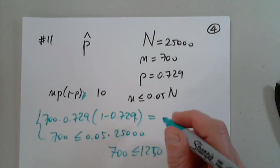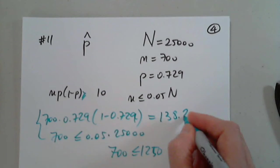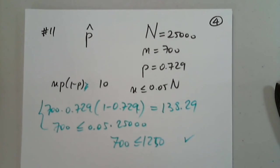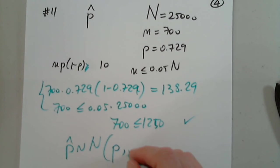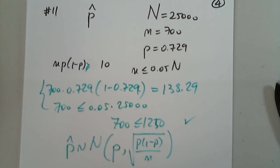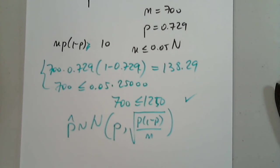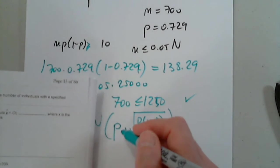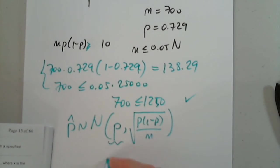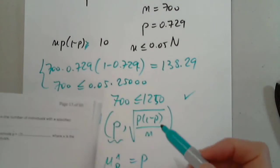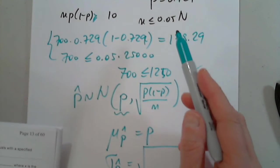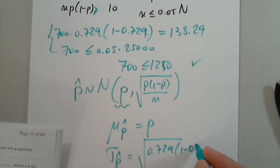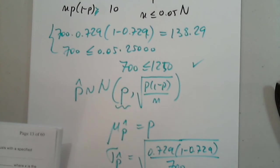So 138.29, so in that case we would say that p-hat is approximately normal with the same mean, right? And in here we have the square root of p(1-p) divided by n. That's the standard deviation. So the mean of p-hat is p, and the standard deviation of p-hat is the square root of 0.729 times (1 minus 0.729) divided by 700. So I have to calculate that.